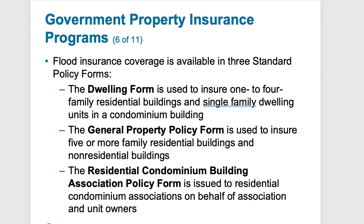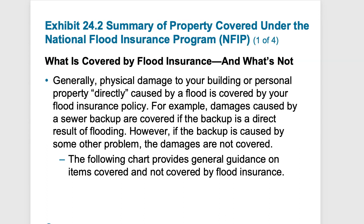The general property policy form is used to insure five-or-more family residential buildings, such as hotels, motels, and apartment buildings. Even shops and restaurants can be covered. The residential condominium building association policy is issued to condos or condo associations on behalf of their unit owners — for example, an HOA saying they have a hundred condo units and buying the policy for everybody under this umbrella.